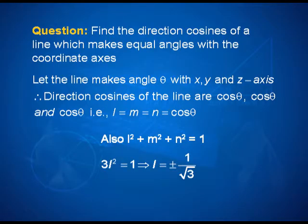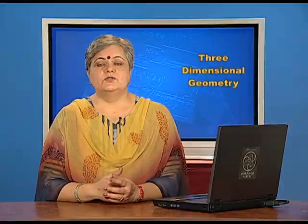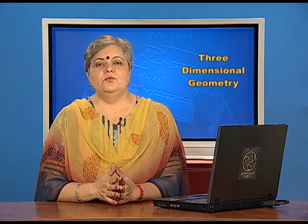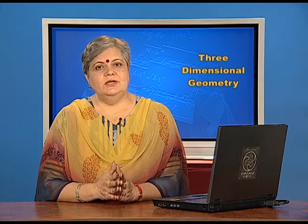I get the value of l as plus minus 1 by root 3. Since we do not know the direction of the line, we will accept both the values to be the required. Therefore, direction cosines of line equally inclined to the axis are plus minus 1 by root 3, plus minus 1 by root 3 and plus minus 1 by root 3. So, with this you are ready to start off with more on 3 dimension geometry. See you in our next lesson.